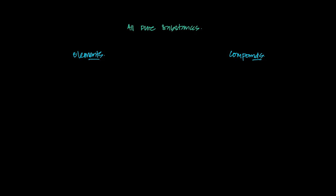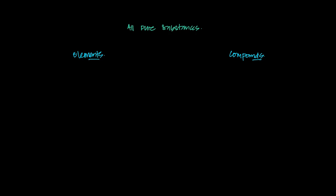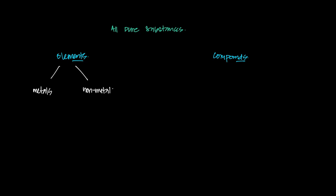Elements can be divided into two categories: metals and non-metals. Obviously, if you have metals, you have a certain bonding and structure. And if you're a non-metal, you'll have certain other structures.